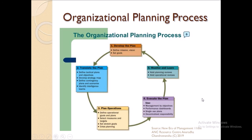Coming back to the organizational planning process: planning is about defining the vision, mission, and objectives. The process starts with developing the plan, where senior management defines overall organizational objectives and goals. Functional-level managers define departmental goals, and operational-level people determine operational managerial goals. Development of plans is the first phase of the organizational planning process.